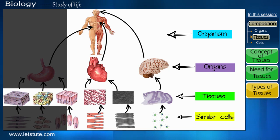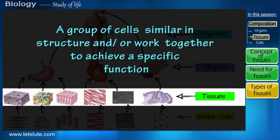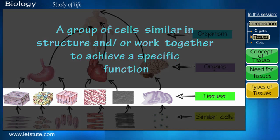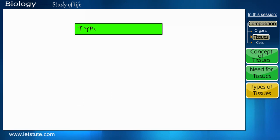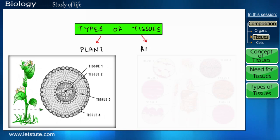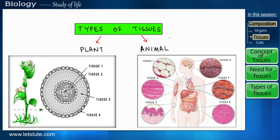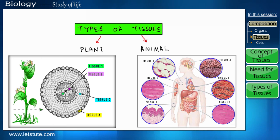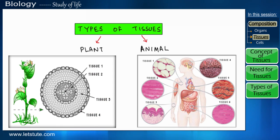So till now we have learned about tissues, how they are formed, and their importance. Now let us move forward and look into the different types of tissues. Basically there are two types — plant and animal tissues — which we will see in more detail in our next session.